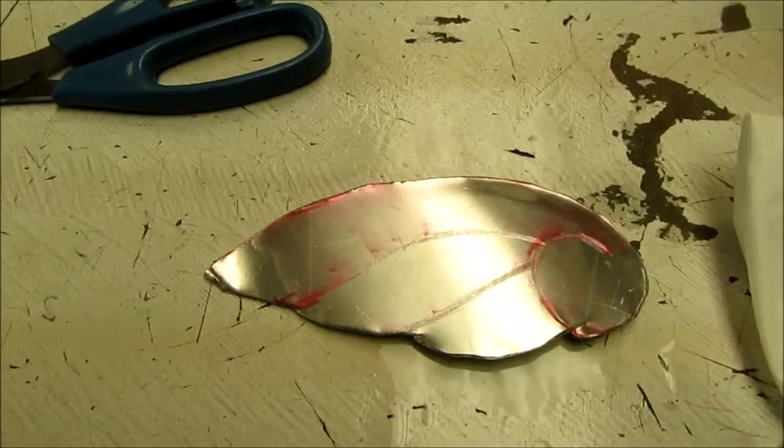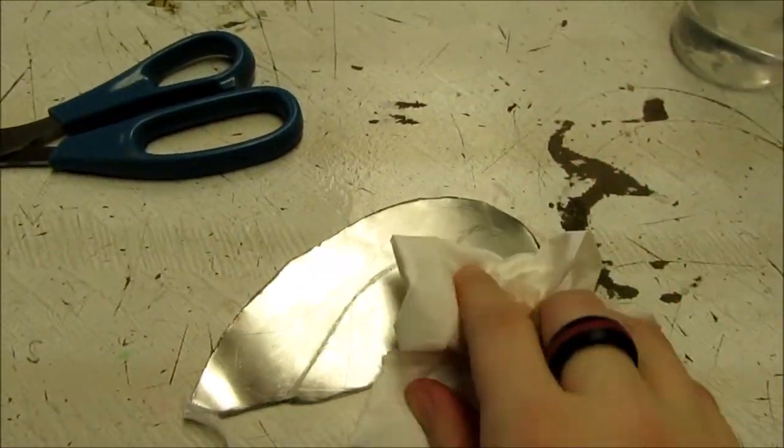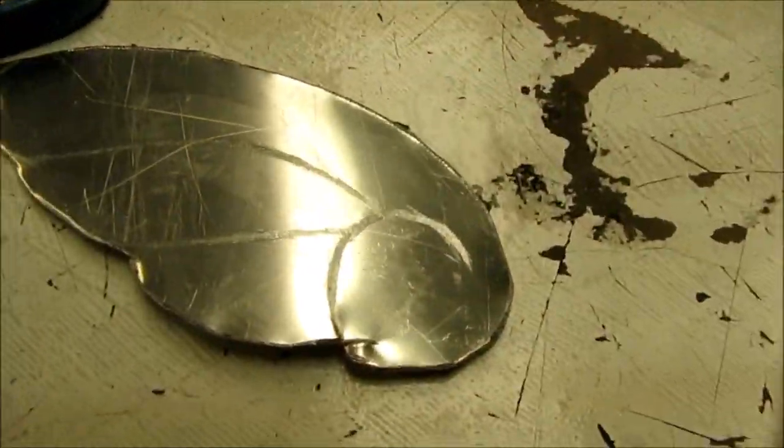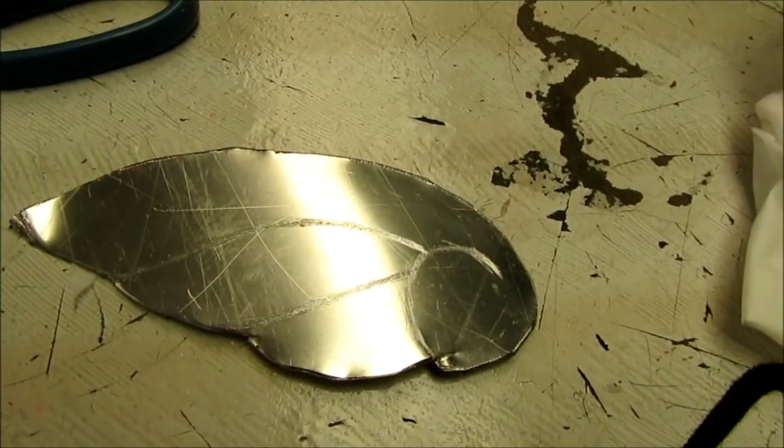Once everything is sanded and engraved, it's time to paint it. First, you're going to wipe it down with some rubbing alcohol. This will get rid of both the marker or whatever you use to draw your lines and any oils left by your hands during the process.